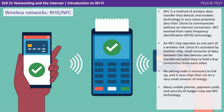NFC is a method of wireless data transfer that detects and enables technology in very close proximity — less than 10 centimetres — to communicate without an internet connection. NFC evolved from Radio Frequency Identification, or RFID, technology. An NFC chip operates as one part of a wireless link. Once activated by another chip, small amounts of data between the two devices can be transferred when held a few centimetres from each other. No pairing code is necessary to link up, and it uses chips that run on very small amounts of energy. Many mobile phones, payment cards and security ID badges now use NFC technology.